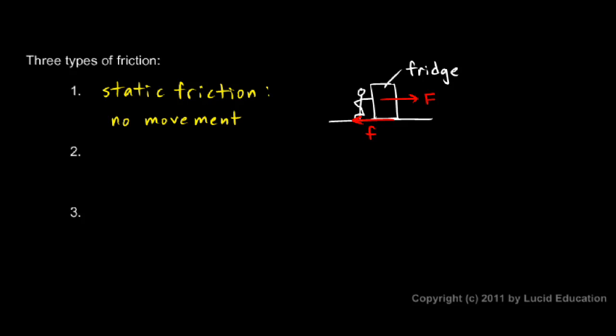If you push it hard enough to make it move, that's what we call kinetic friction. So kinetic friction involves movement between the surfaces. One surface is sliding relative to the other. So with kinetic friction, there's movement between the surfaces.